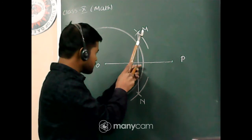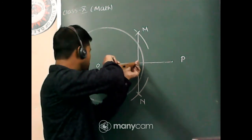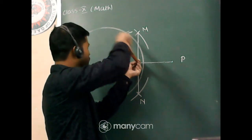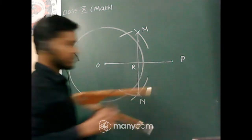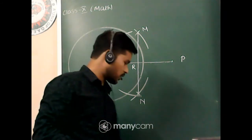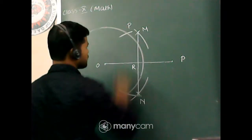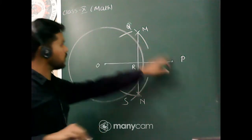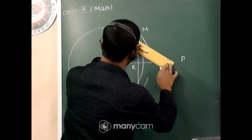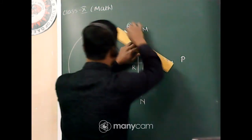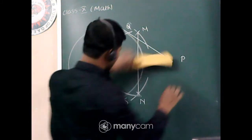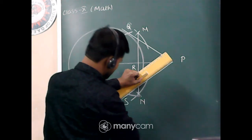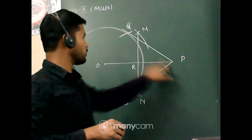Now set your compass at point R and take radius RO. Cut the circle at two points — one upper and one lower. Name these points Q and S. Join PQ and PS. So PQ and PS are the tangents from point P to the circle.